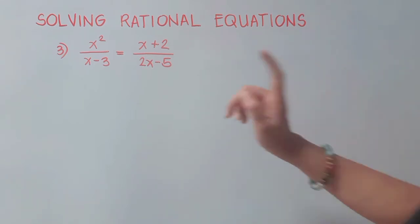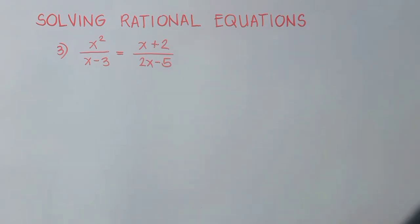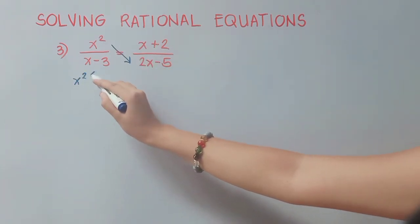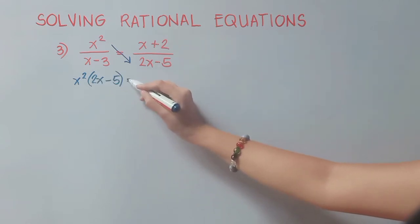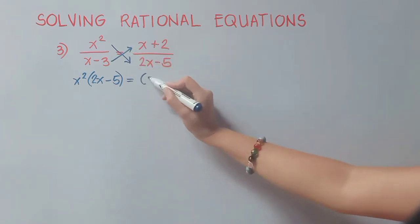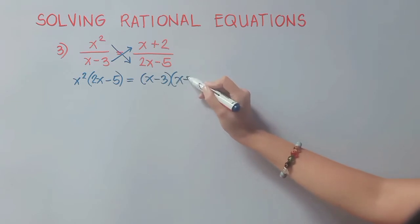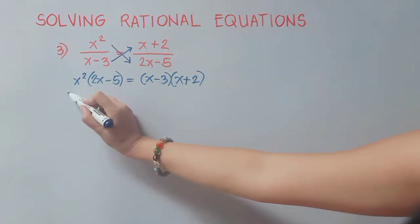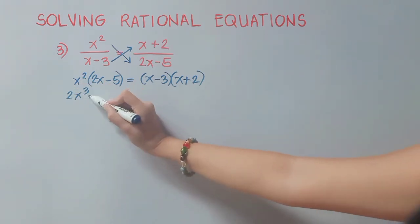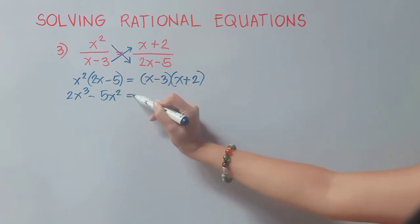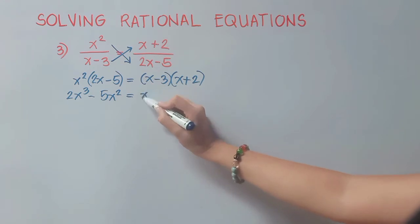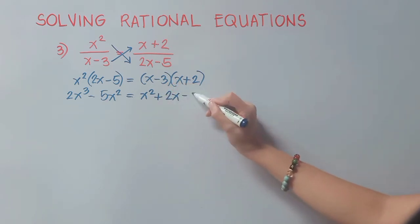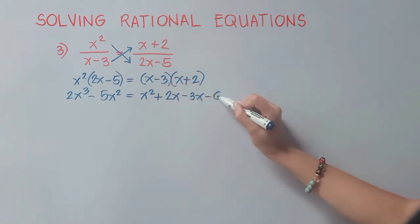In number 3, we cannot have a solution of positive 3 or positive 5/2 since it will make our denominators 0. So let us now cross multiply. We have x² multiplied to (2x − 5) is equal to (x − 3) multiplied to (x + 2). Let us distribute x²: x² times 2x is 2x³, and x² times negative 5 is negative 5x². On the right side: x times x is x², x times 2 is 2x, negative 3 times x is negative 3x, and negative 3 times 2 is negative 6.